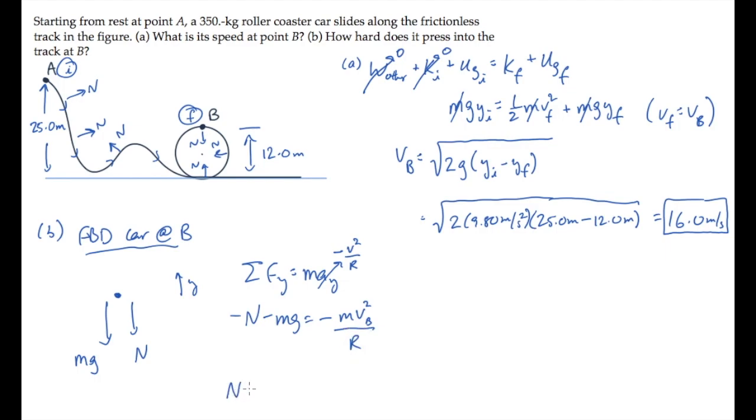So we can now solve for the normal force. It equals the mass times V squared over R minus G. And substitute the values to see that the normal force at the top of the track is 1.15 times 10 to the 4th Newtons.